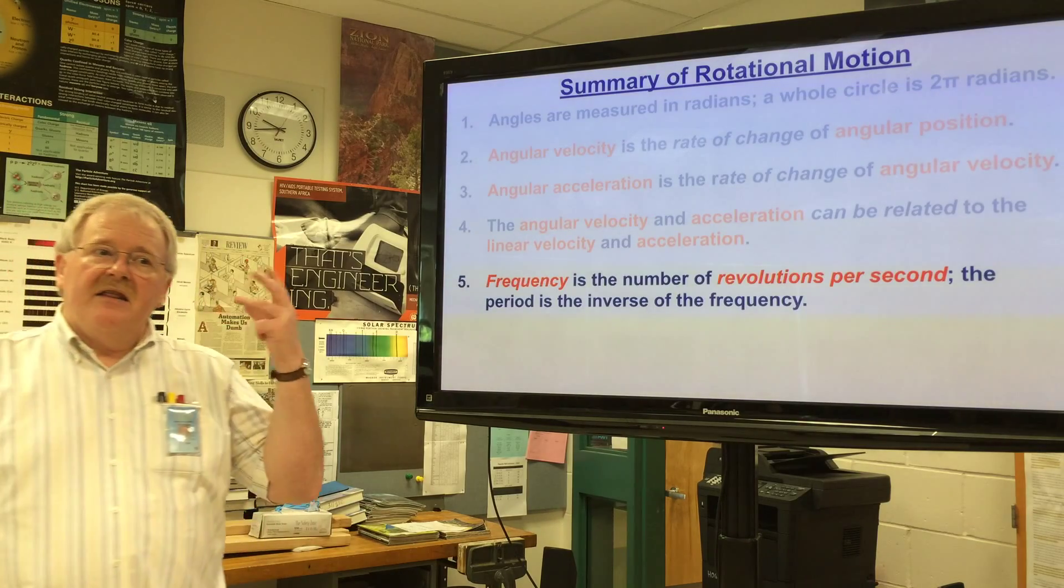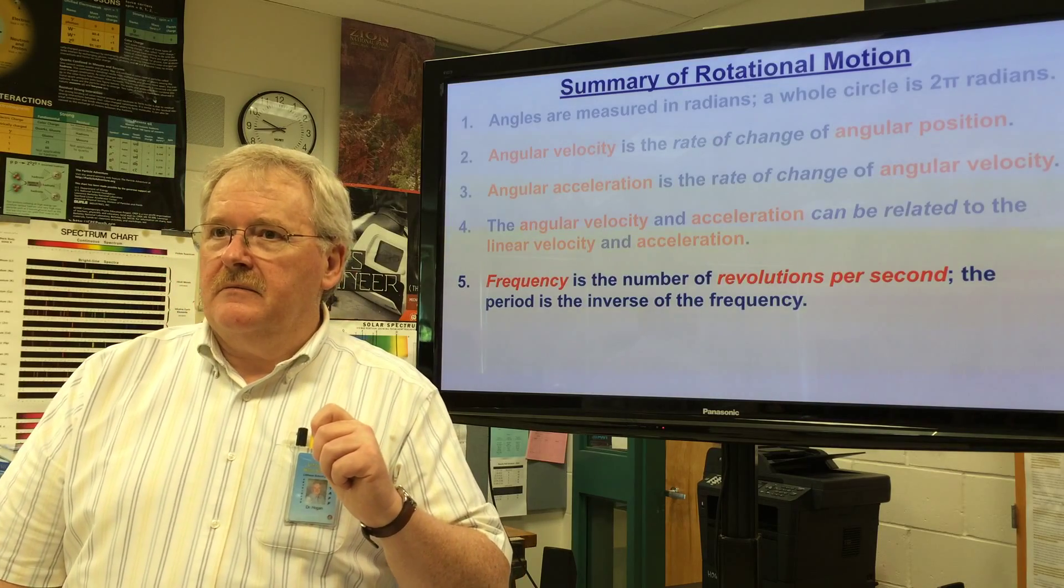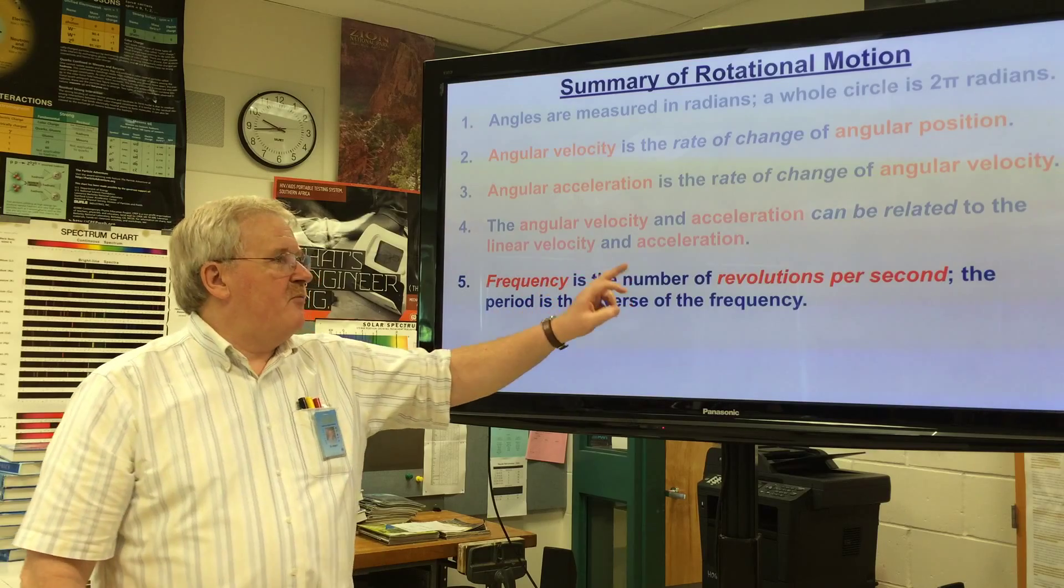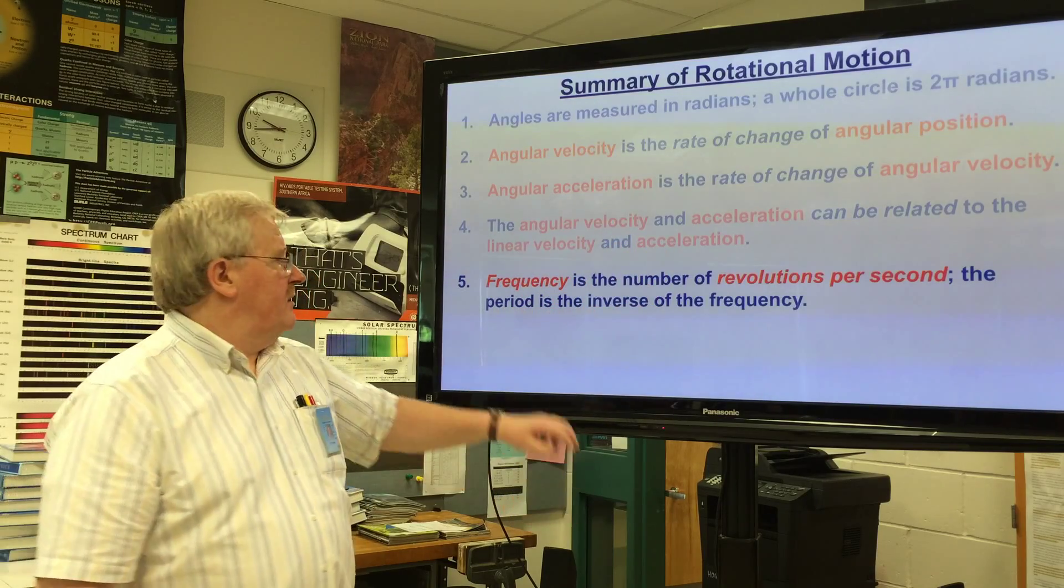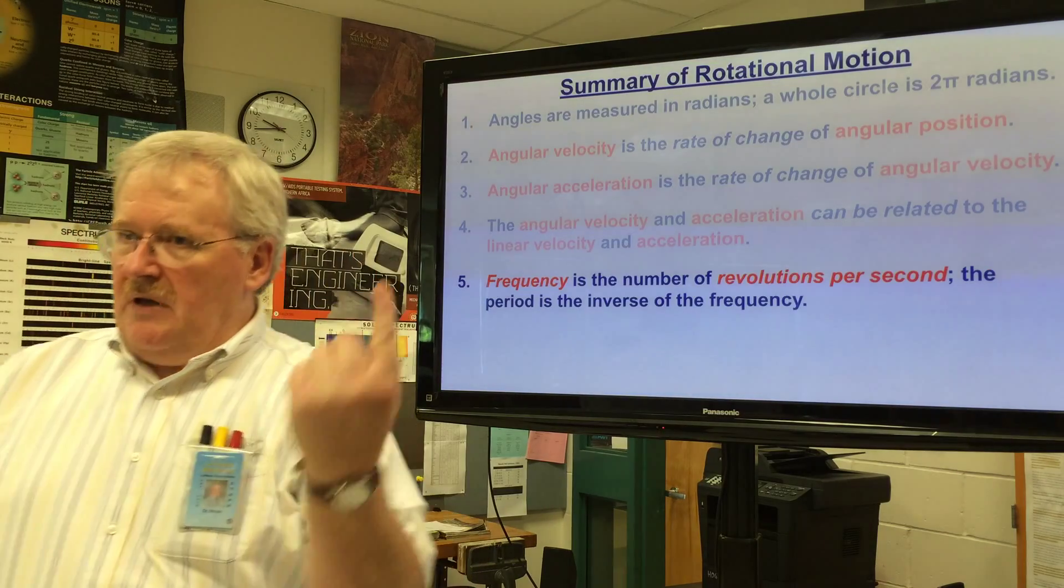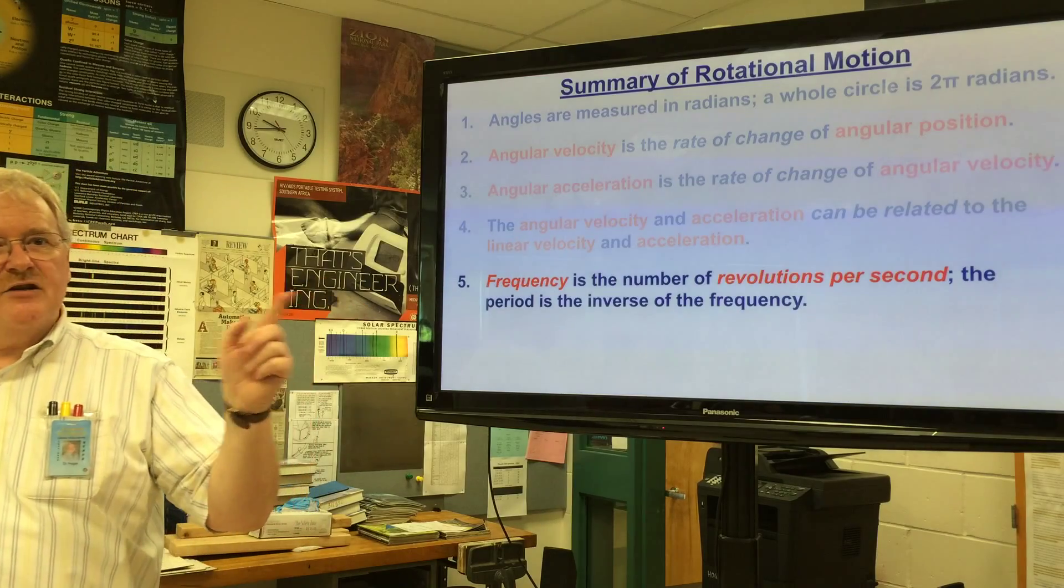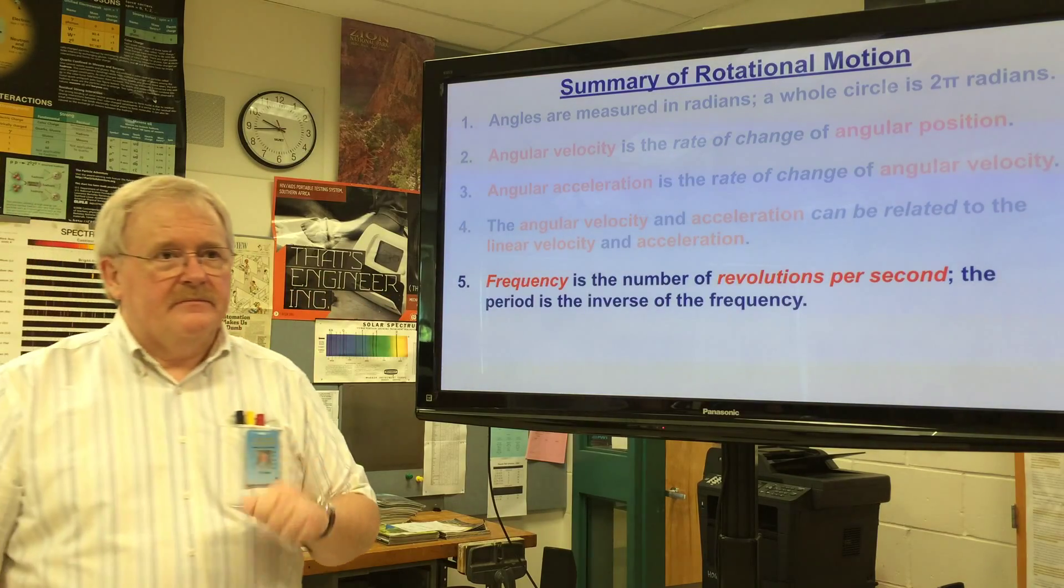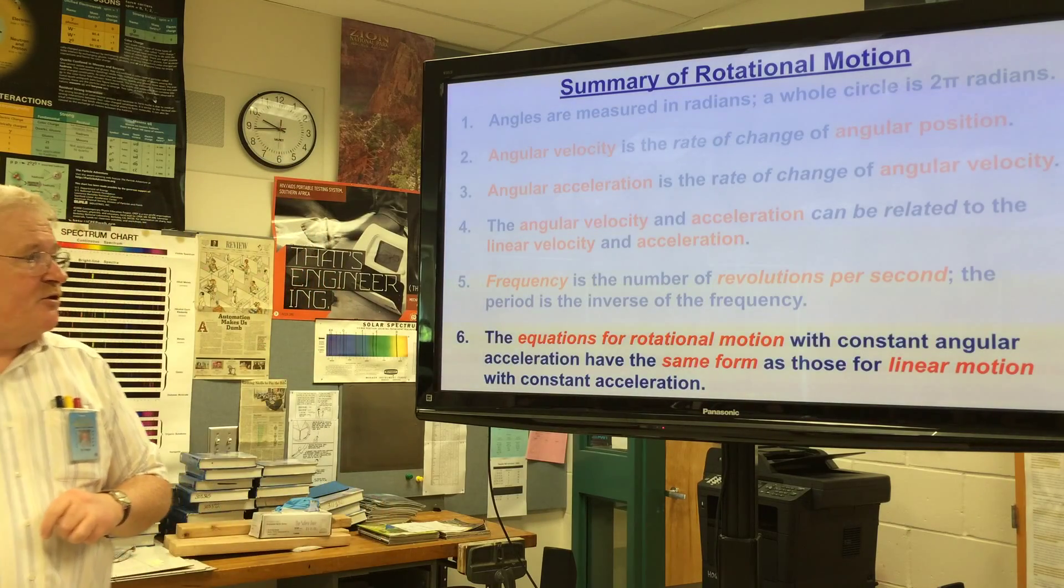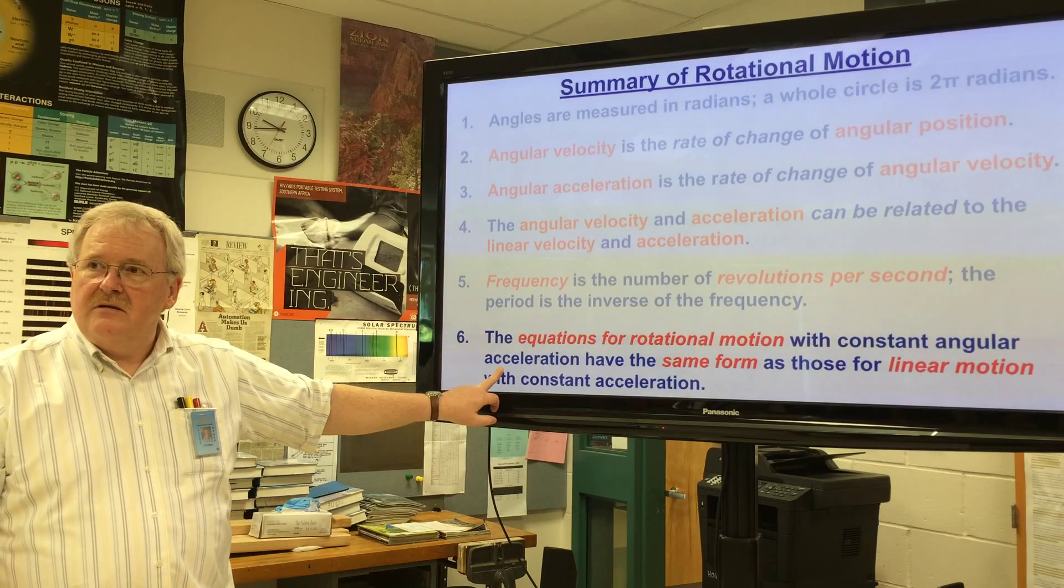Frequency is the number of revolutions per second. Period is the inverse of the frequency and is the amount of time it takes to complete one revolution. So frequency is the number of revolutions per second, period is the amount of time in seconds it takes to complete one revolution - if you like, it's seconds per revolution.